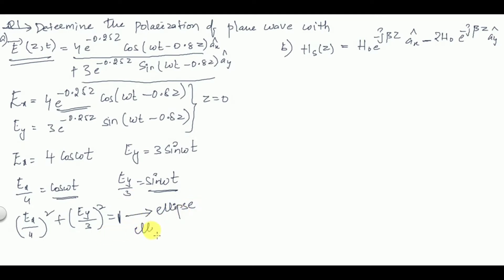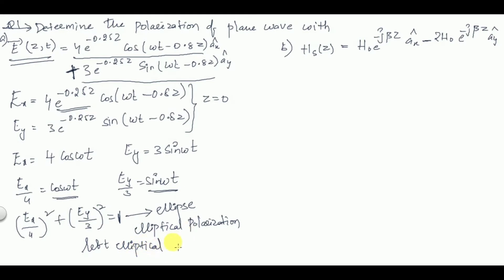This equation represents an ellipse, so the polarization is elliptical polarization. This is how we determine whether a given polarization is linear, circular, or elliptical. For elliptical polarization, if there is a positive sign between the two terms it represents left elliptical polarization, and if there is a negative sign it represents right elliptical polarization.